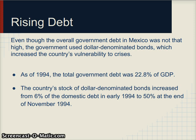Because of the overvalued exchange rate, lots of consumption, and the current account deficit, there started to be a rise in debt. Although government debt wasn't very high compared to other countries — debt to GDP was only about 23 percent in 1994 — the problem was that Mexico's stock of dollar-denominated bonds increased significantly. Mexico started borrowing in foreign currency, rising from about 6 percent in early 1994 to about 50 percent by the end of the year.